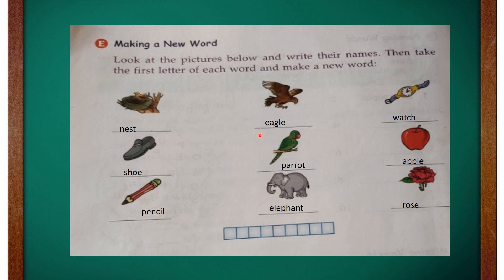Okay children, with this we have completed writing the names of the pictures in this exercise. Now what we are going to do is take the first letter from each picture and fill in the box. So what is the first letter of nest? N — write down N here. The first letter of eagle is E — write down E here. The first letter of watch is W — write down W here.